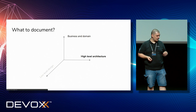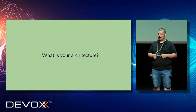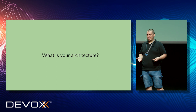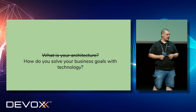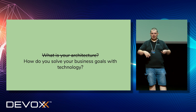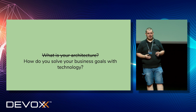This is very important for the next stage, which we mean as documenting high-level architecture. To document the architecture, you first have to answer the age-old question of what architecture actually is. For us, architecture is the answer to the question: how do you solve your business goals with technology? Since we already described the business goals with the processes before we started thinking about this, we actually know how to apply technology to processes because we have them already written down.